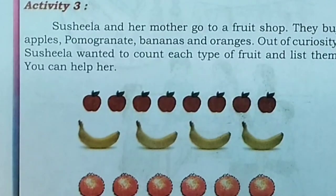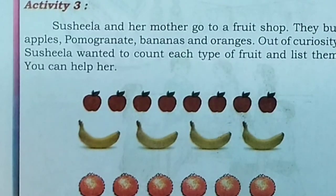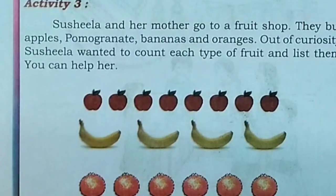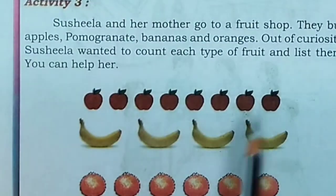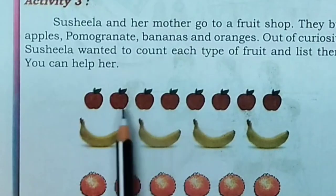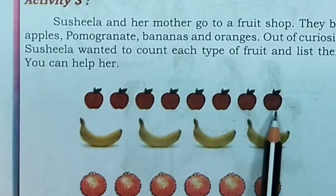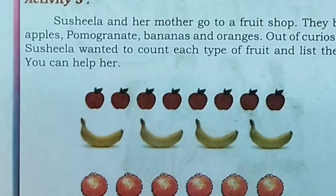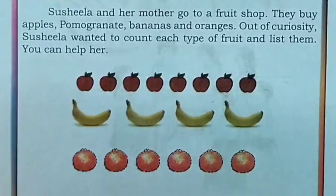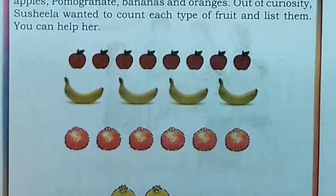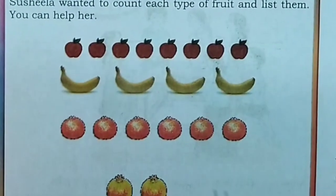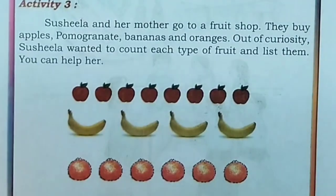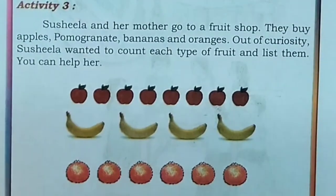So, Susila wants to count how many fruits they have bought. You can help her count the different number of bananas, apples, pomegranates and oranges they have bought. Now, using this picture, we will find the collection of data and we will find the total number of fruits.